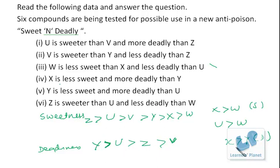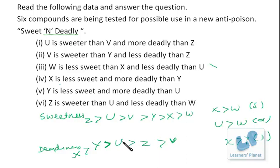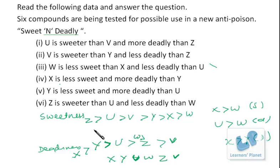X is more deadly than Y and Y is more deadly than U. W is less deadly than U, so U is deadlier than W. Z is less deadly than W, so W lies between U and Z. The deadliness sequence is X, Y, U, W, Z, V. The sweetness sequence is arranged alongside. This is decreasing order for both.